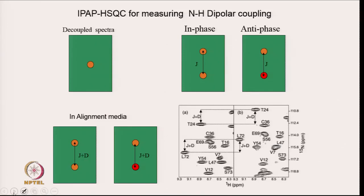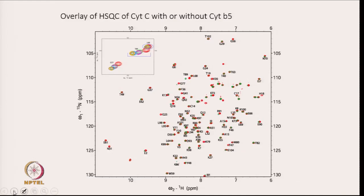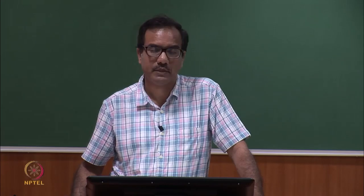Dipolar coupling is measured using alignment media such as bicelles, where the protein is partially aligned with the magnetic field. In the decoupled spectrum you get the J value; in the coupled spectrum in alignment medium the splitting equals J+D. Taking the difference between the two measurements gives the dipolar coupling D, which is used as an additional constraint to obtain a much better quality NMR structure.